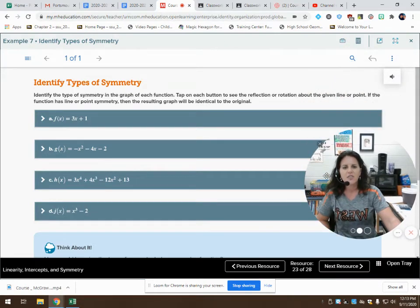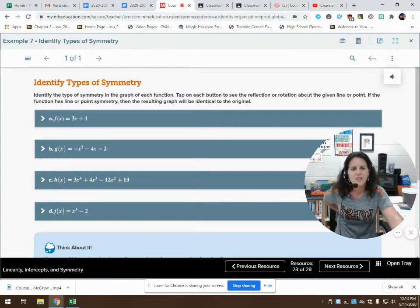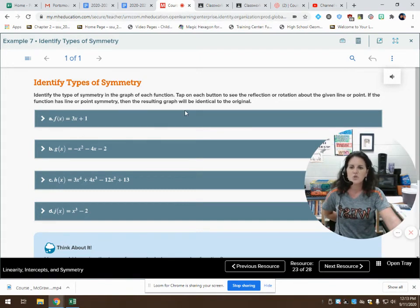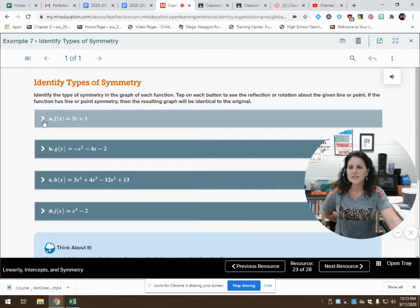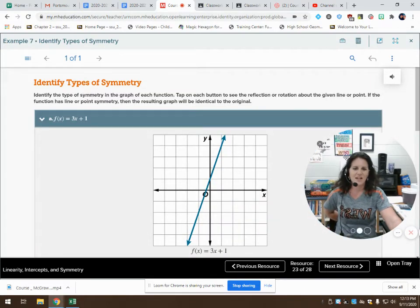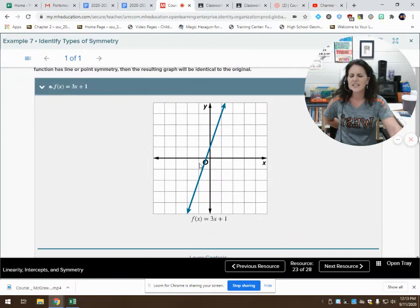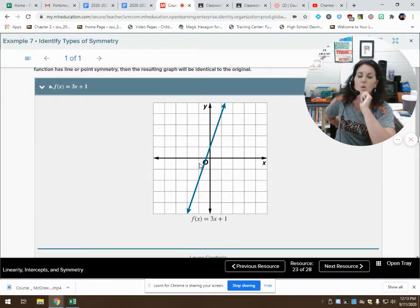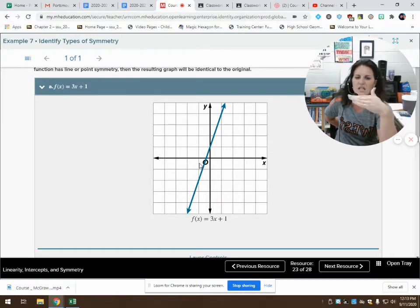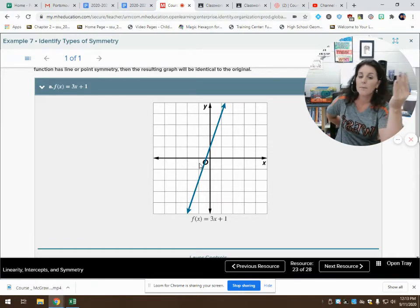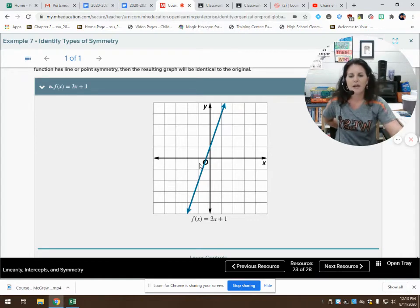Identify the types of symmetry in the graph of each function. Tap on each button to see the reflection or rotation about the given line or point. If the function has line or point symmetry, then the resulting graph will be identical to the original. I'm getting tired of all this reading. I love to read, but I don't know why I keep getting tongue-tied. So looking at this, do you guys think that there might be a point here or a line where if I was to fold this across a line or a point, that it would be reflected back onto itself?